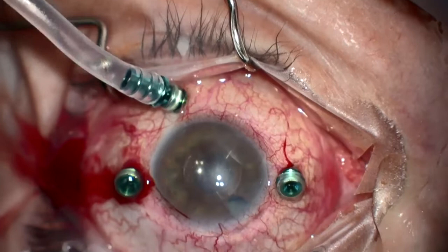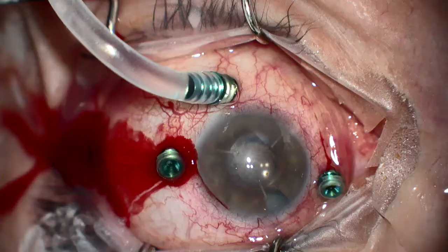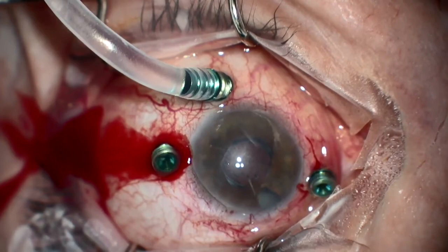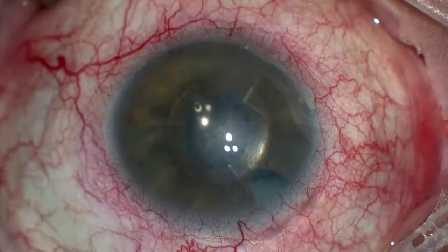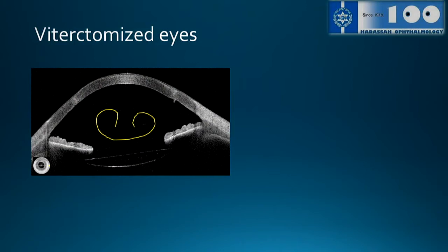We are using posterior maintainers in all cases where we have a compromised capsule or vitrectomized eyes. In a vitrectomized eye, we must distinguish between core vitrectomy and full vitrectomy, because core vitrectomy sometimes behaves like a normal eye. But with full vitrectomy, you have to provide support. One problem is lack of support from the posterior part of the eye, making the graft too mobile — it's really hard to open those grafts.